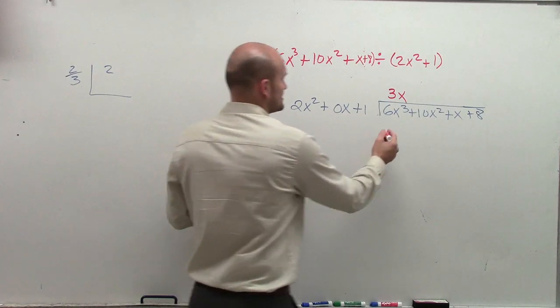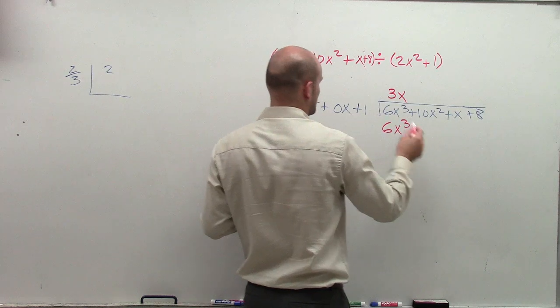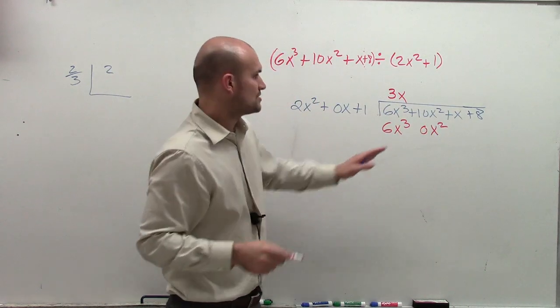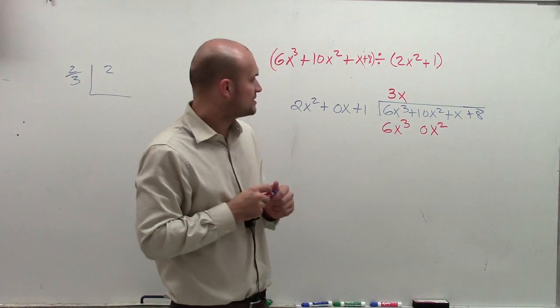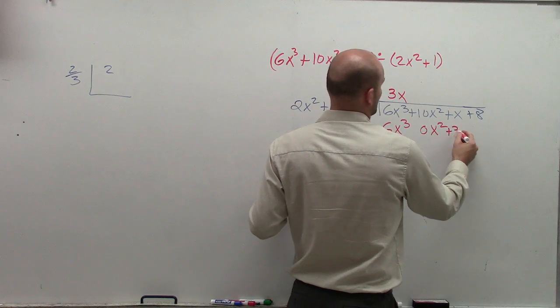3x times 2x gives me 6x cubed. 3x times 0x gives me 0x squared. So then, remember, once you're done, and then 3x times 1 is going to give me plus 3x.